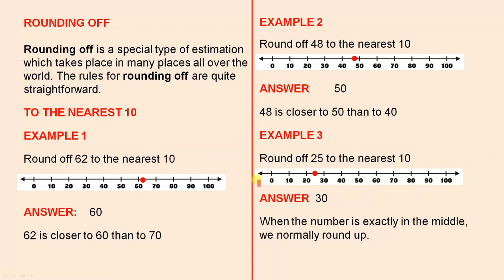Let's look at rounding off to the nearest 10. First example: Round off 62 to the nearest 10. I've put a number line here so we can visualize what's going on. There's a red dot which approximates 62. The answer to the nearest 10 is 60, because if you look at the red dot, 62 is closer to 60 than to 70. And that's the reason when we round off the answer is 60.